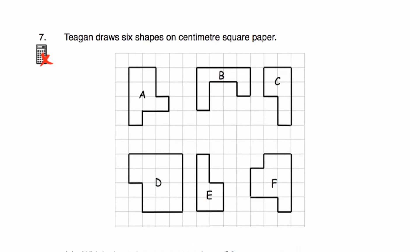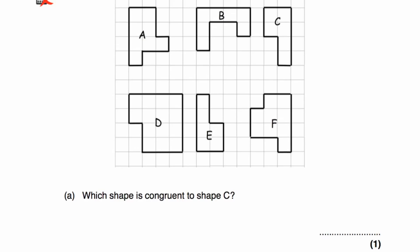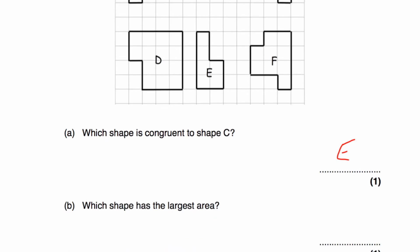Question number seven: Ti can draw six shapes on centimetre square paper — shapes A, B, C, D, E, F. Part A says: which shape is congruent to shape C? Shape C has a two-by-two square on top with two extra squares going down. Looking at the shapes, E is congruent to C — it has the same shape and size.